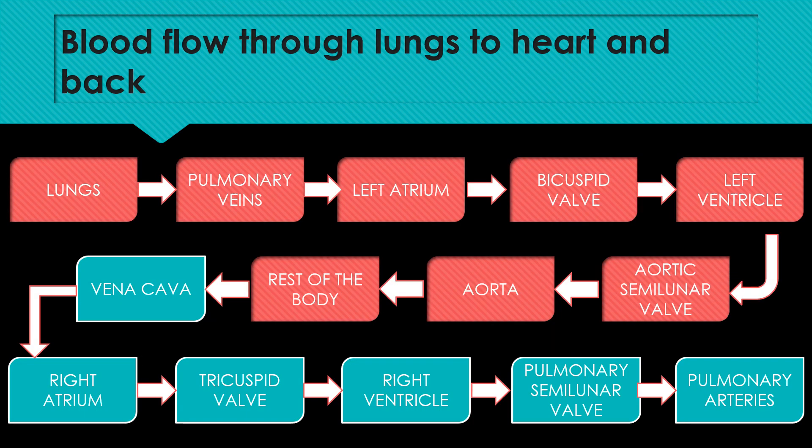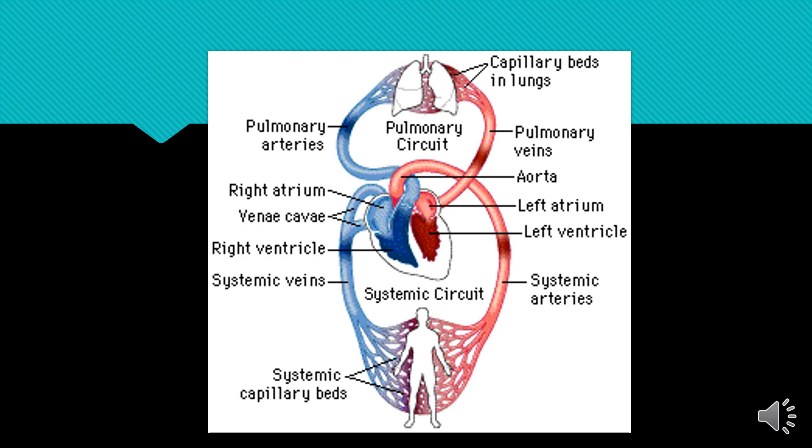Before that, let's focus on blood flow through the lungs to the heart and back. Oxygenated blood from the lungs will pass through the pulmonary vein and enter the left atrium. The bicuspid valve will open and blood enters the left ventricle. The aortic semilunar valve opens due to high pressure in the left ventricle. The left ventricle pumps oxygenated blood to the aorta and the rest of the body, such as the kidneys. Then, deoxygenated blood is carried to the right atrium through the vena cava. The tricuspid valve opens and blood enters the right ventricle. The right ventricle pumps blood to the lungs through the pulmonary artery once the pulmonary semilunar valve is open.